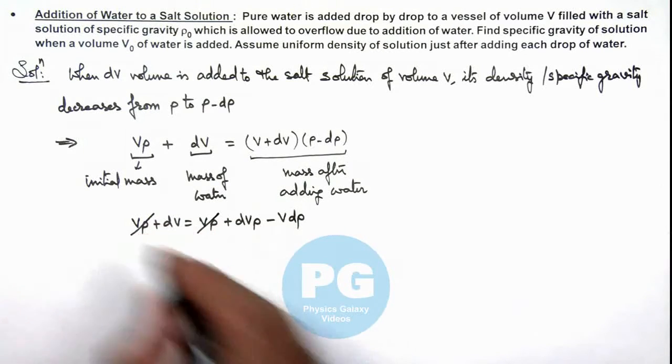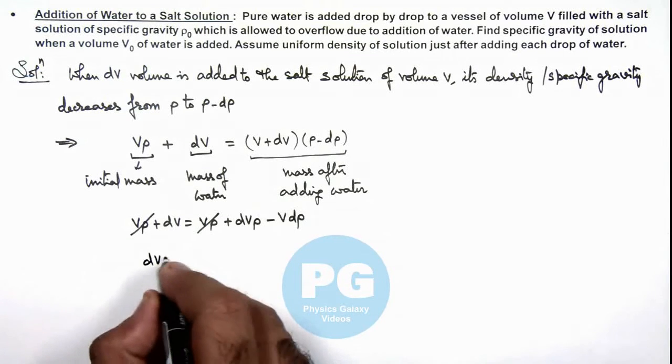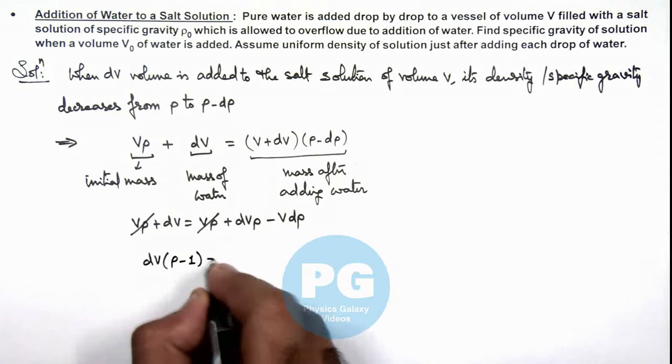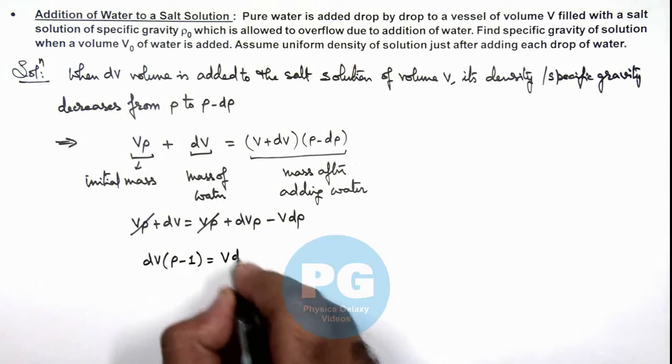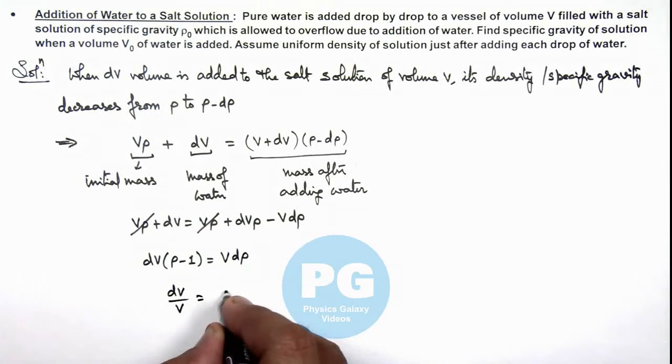Here Vρ also gets cancelled out, and this becomes dV multiplied by (ρ minus 1) is equal to V·dρ. So this becomes dV/V is equal to dρ/(ρ minus 1).